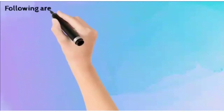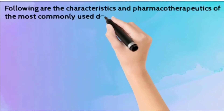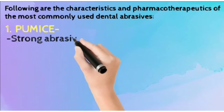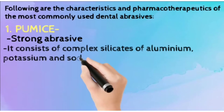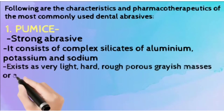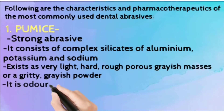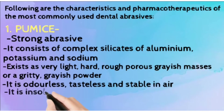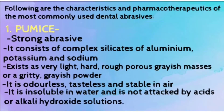The following are the characteristics and pharmacotherapeutics of the most commonly used dental abrasives. The first is pumice, which is a very strong abrasive. It consists of complex silicates of aluminum, potassium, and sodium. It exists as very light, hard, rough, porous grayish masses which are gritty. It is odorless, tasteless, and stable in air. It is soluble in water and does not get attacked by acids.